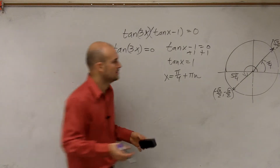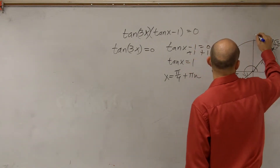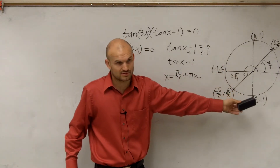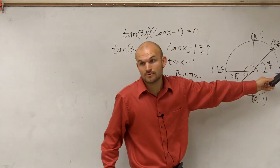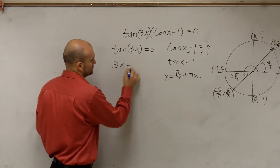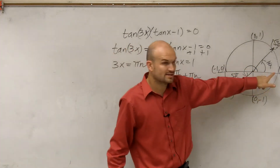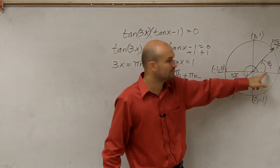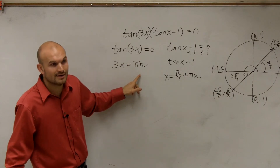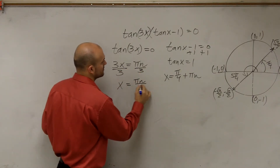Now let's look at when tangent equals 0. Remember, tangent is y over x, so we look at the points (1, 0) and (−1, 0). At pi halves and 3 pi halves, y over x is undefined, so those aren't our answers. But we have two answers: at angle 0 and at angle pi. So I can say 3x equals pi times n — because multiples of pi keep hitting those points. Then solving for x, I get x equals pi·n divided by 3.